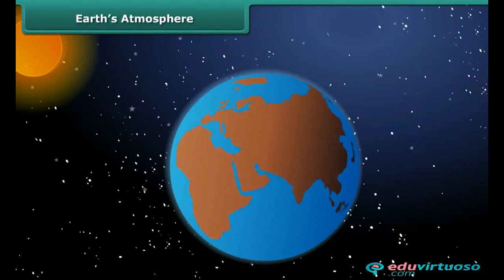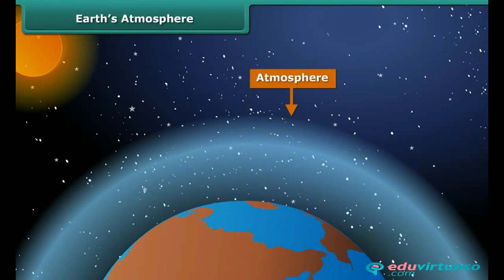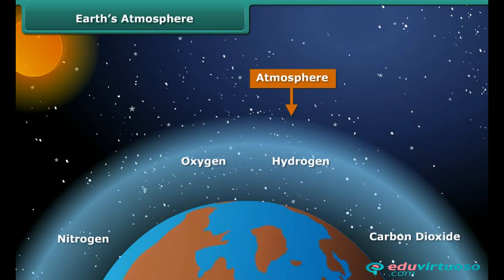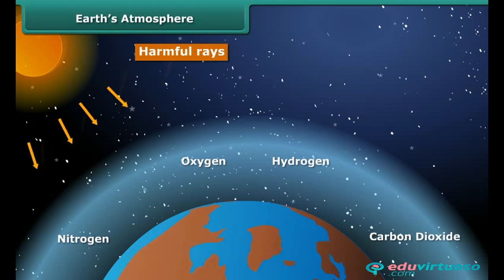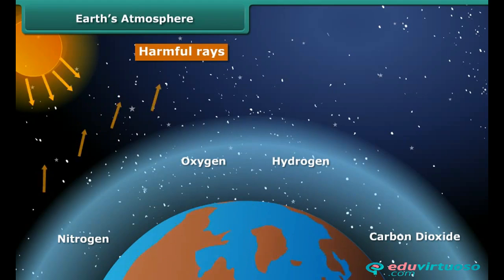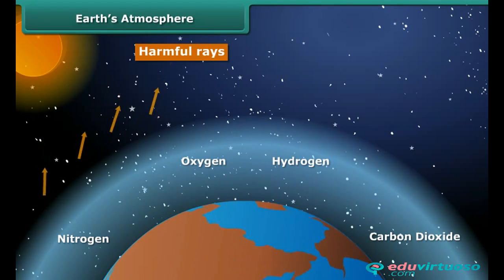Our Earth is surrounded by a blanket of several gases called the atmosphere. This atmosphere contains mainly nitrogen, oxygen, hydrogen, and carbon dioxide along with some other gases. The atmosphere protects us from harmful rays that can come from the sun, and plays a very important role in regulating the temperature of Earth to sustain life on it.